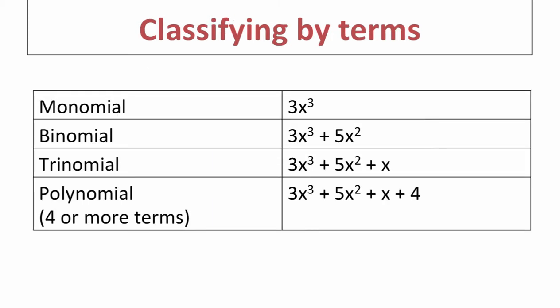Now that we know the basic vocabulary, let's look at how to classify a polynomial based on the number of terms. A monomial only contains one term — you can see 3x to the third is only one term because the only operation we have is multiplication.